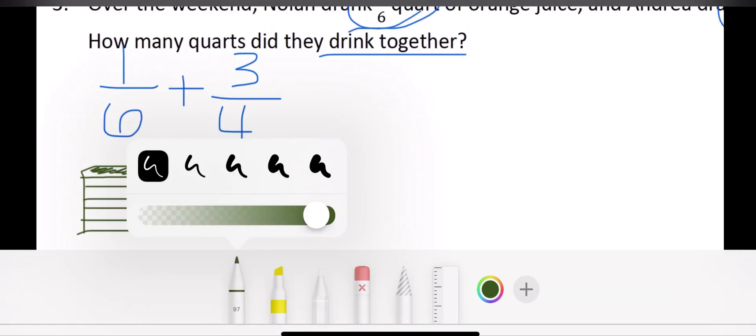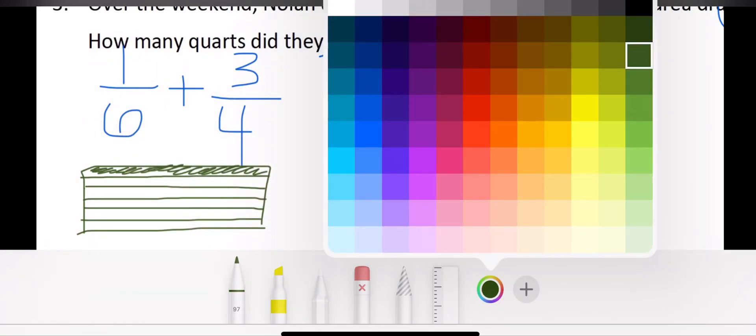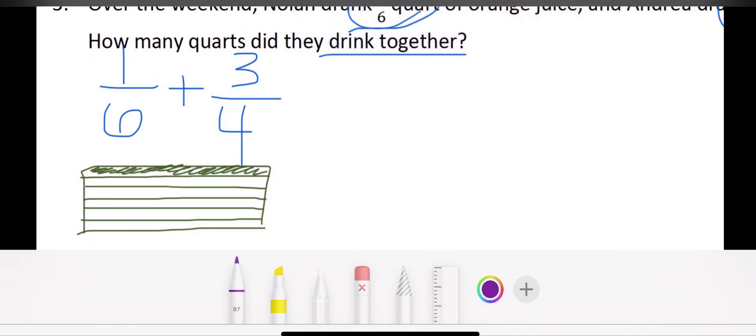Now my next number—my next fraction, I should say—is 3/4. So for that one, I'm going to draw another rectangle, and I know that I have a total of four pieces, or my denominator is four.